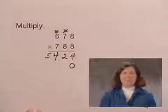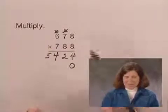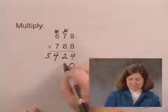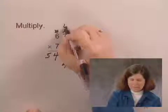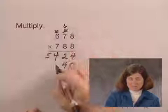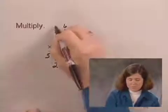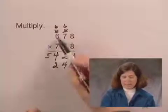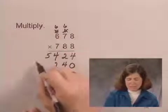I'll cross off those sixes, since I don't need them anymore. Now 8 times 8, again, is 64. 8 times 7 is 56, plus 6 is 62. And 8 times 6 is 48, plus 6 is 54.